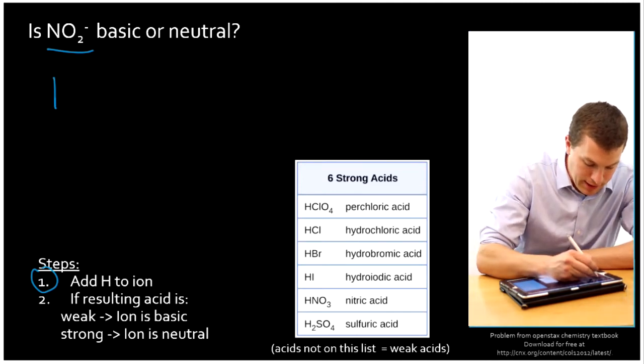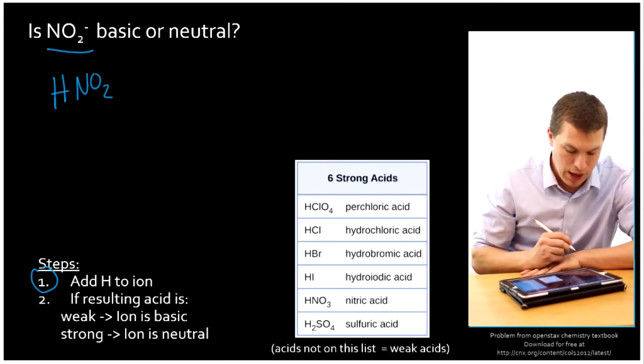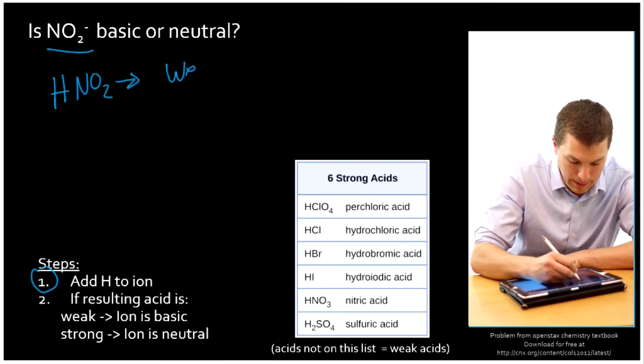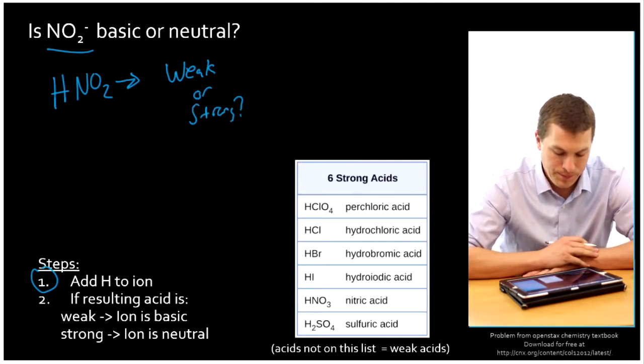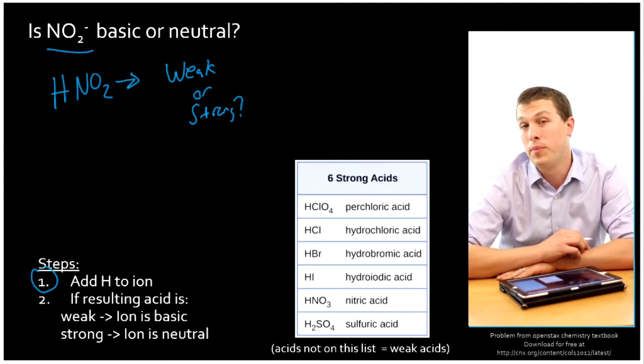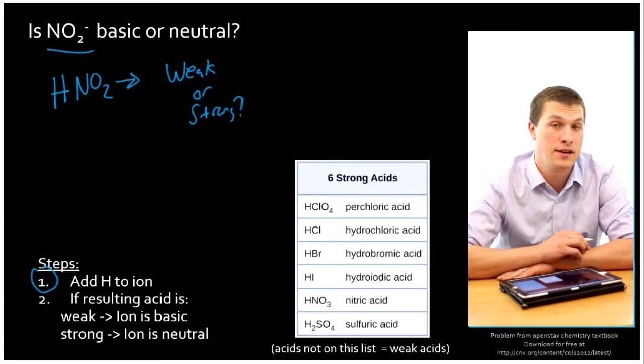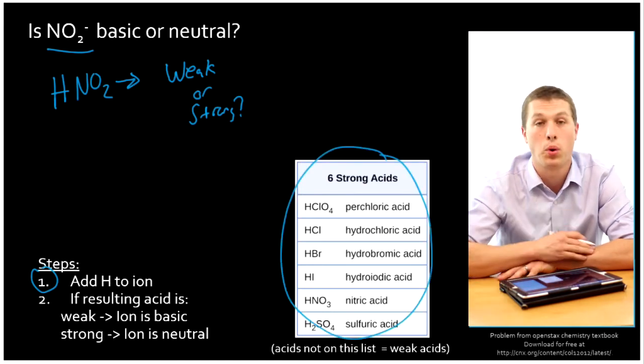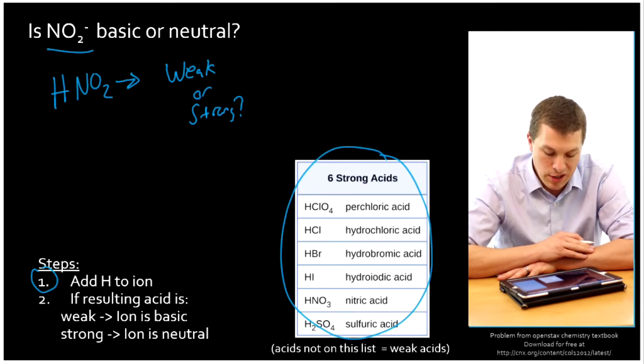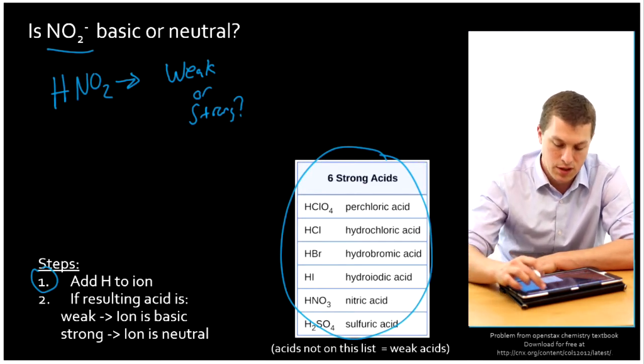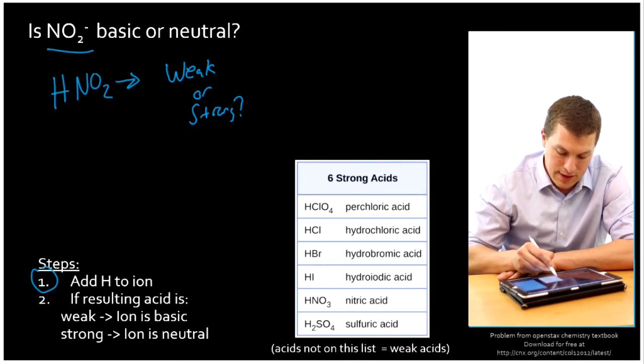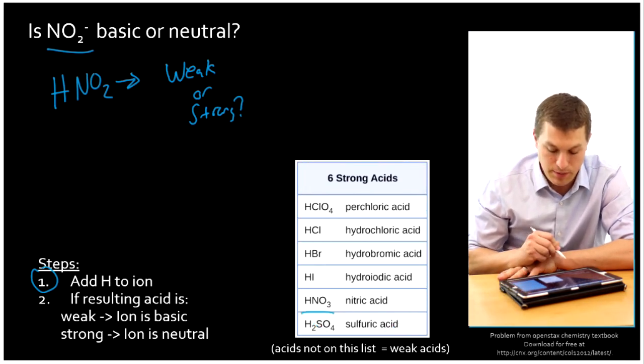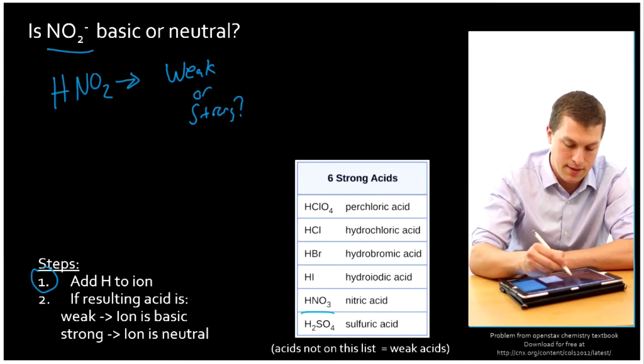And the original acid is what's important for determining if it's basic or neutral. So we're going to add an H back to it, and we're going to get HNO2. And we want to know, is this guy weak or strong? You can look this up on a table, or you can do it by Ka. If the Ka is really big, it's a strong acid. If the Ka is really small, it's a weak acid. Or you can look at a table like this. These are the strong acids, the ones that you come up against all the time. So if an acid is not on this list, it's a weak acid.